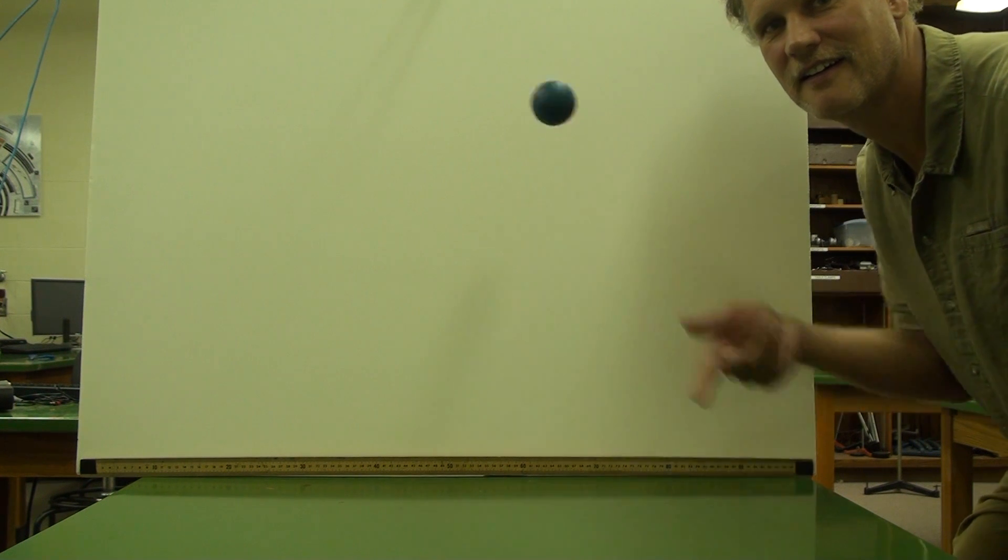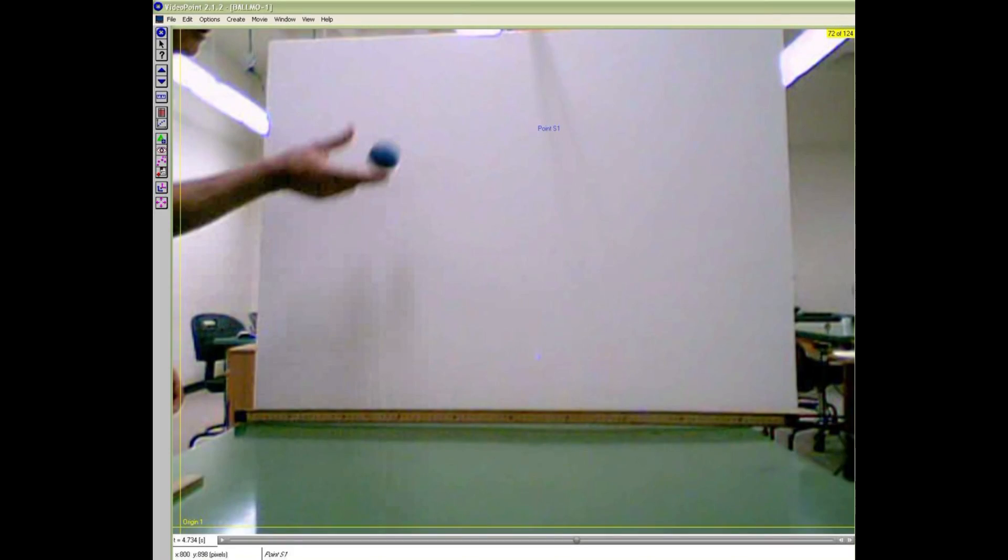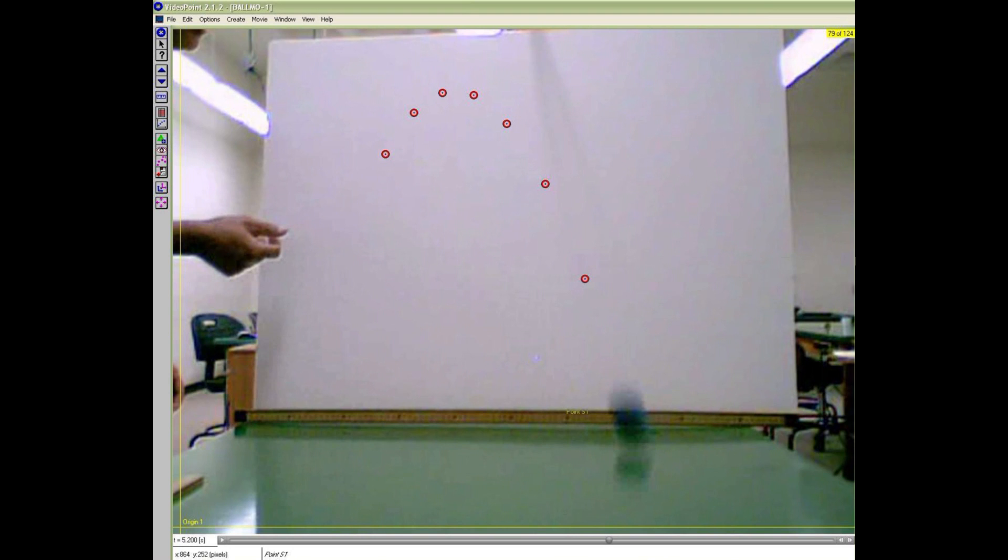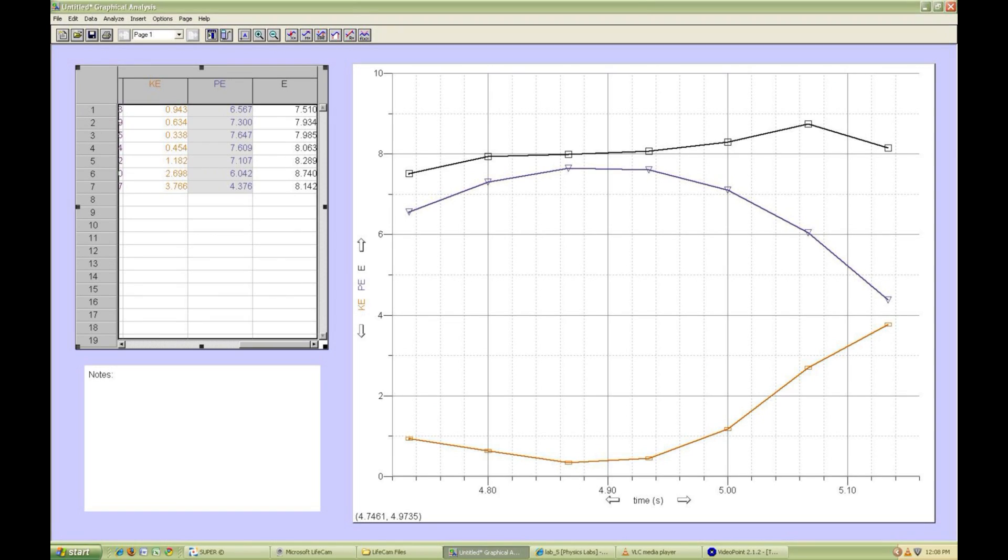This experiment may be repeated for a tossed ball. Starting with the frame where the ball is completely released, track its motion until it hits the table. Here's a plot of kinetic, potential, and at the top, the total energy.